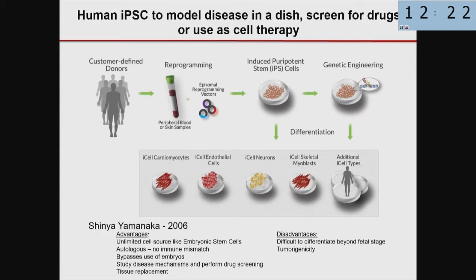The difficulties in scaling up and making quality-controlled cells at a reasonable cost are immense. Right now, autologous cells — which would overcome the immune mismatch — are not envisioned, and people are focusing on cell banks that are non-autologous.